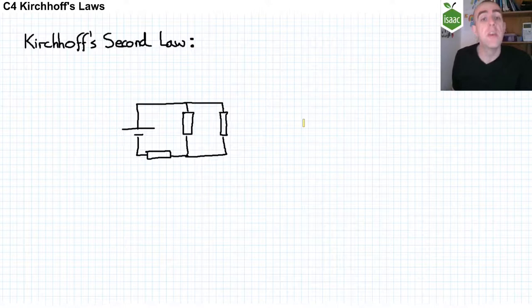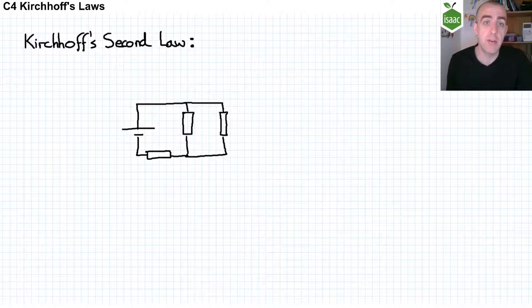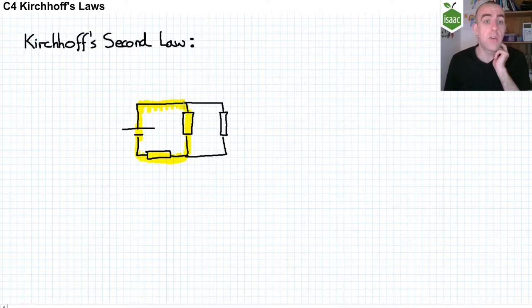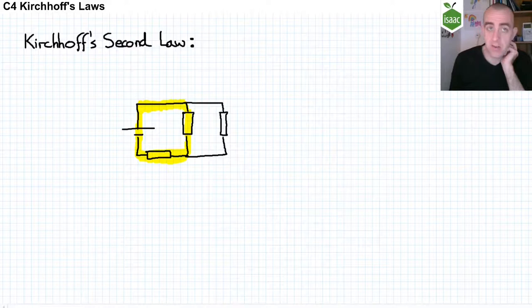So let's look at the first loop. Current flowing from the power supply and through the first resistor. Now Kirchhoff's second law says that the potential difference dropped across the components in this loop are equal to the potential difference gained in the power supply of this loop. So if we call the power supply potential difference epsilon for the EMF...